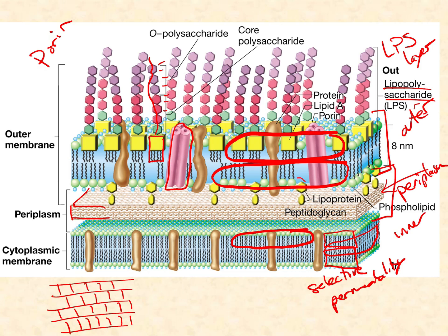One other thing to point out are these lipoproteins. The protein component links onto the peptidoglycan, while the lipid component embeds inside the LPS layer — because the interior of the LPS layer, just like the interior of the cytoplasmic membrane, is very hydrophobic. What this does is make sure that the LPS layer and the peptidoglycan move together as one sheet, minimizing shearing that could happen if all three layers — LPS, peptidoglycan, and cytoplasmic membrane — were all free-moving relative to one another.